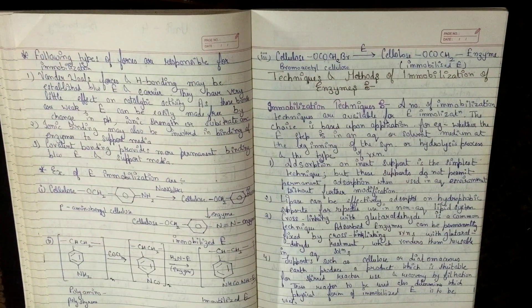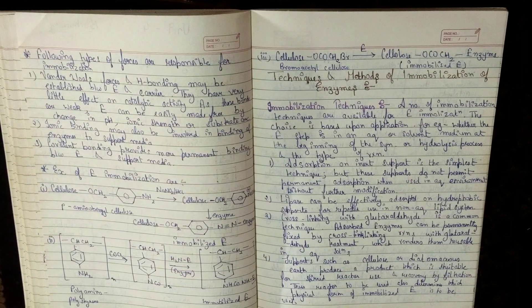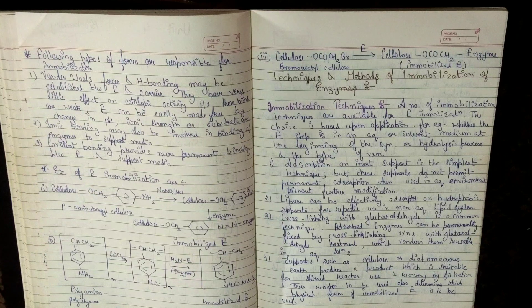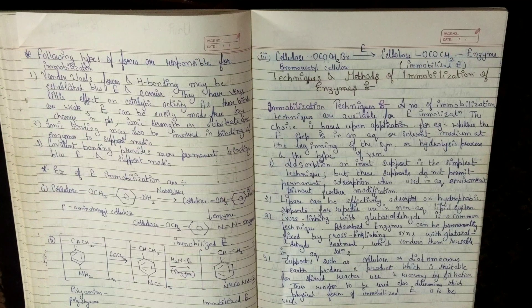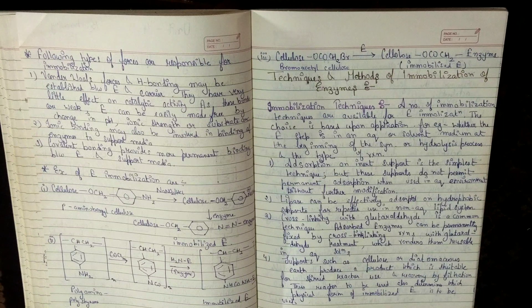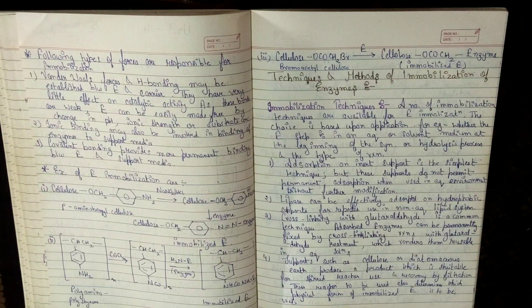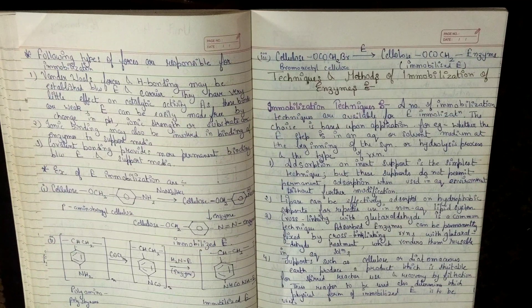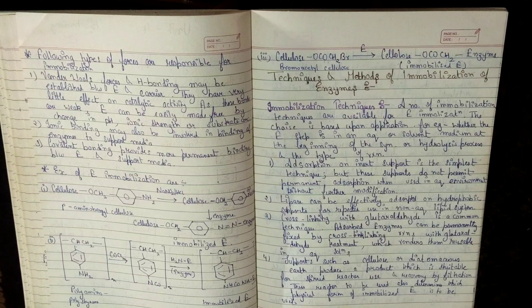Following types of forces are responsible for immobilization. These are van der Waals forces and hydrogen bonding, ionic bonding and covalent bonding. Let us read. First, van der Waals forces and hydrogen bonding may be established between enzyme and carrier. They have very little effect on catalytic activity. As these bonds are weak, enzyme can easily be made free by change in pH, ionic concentration or substrate concentration.